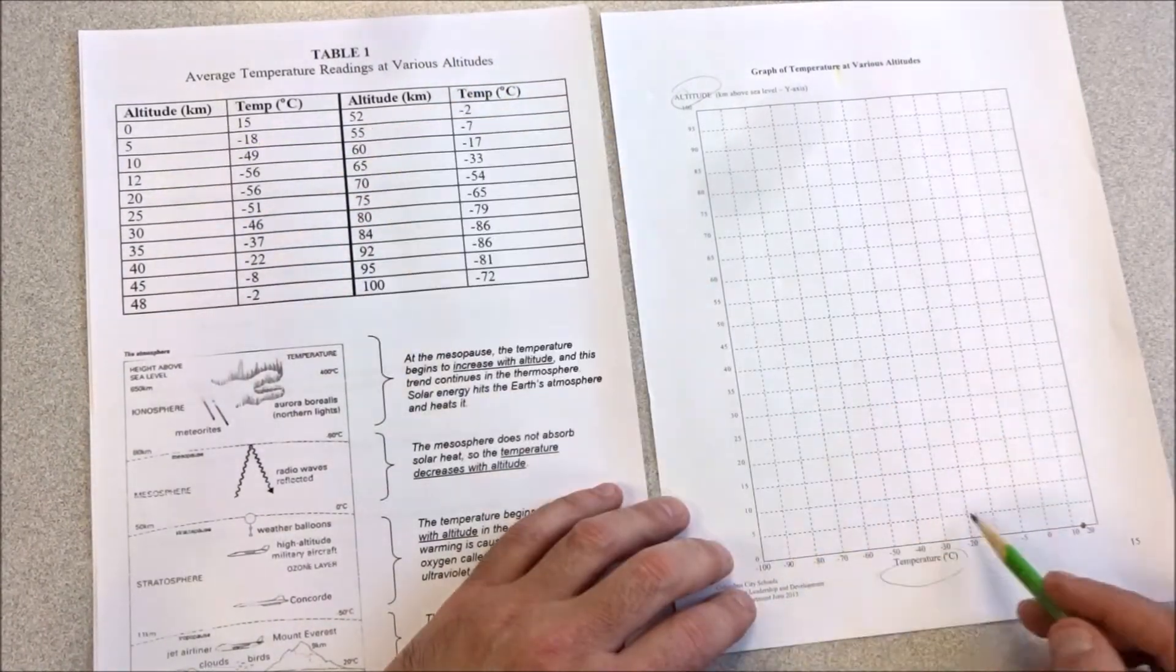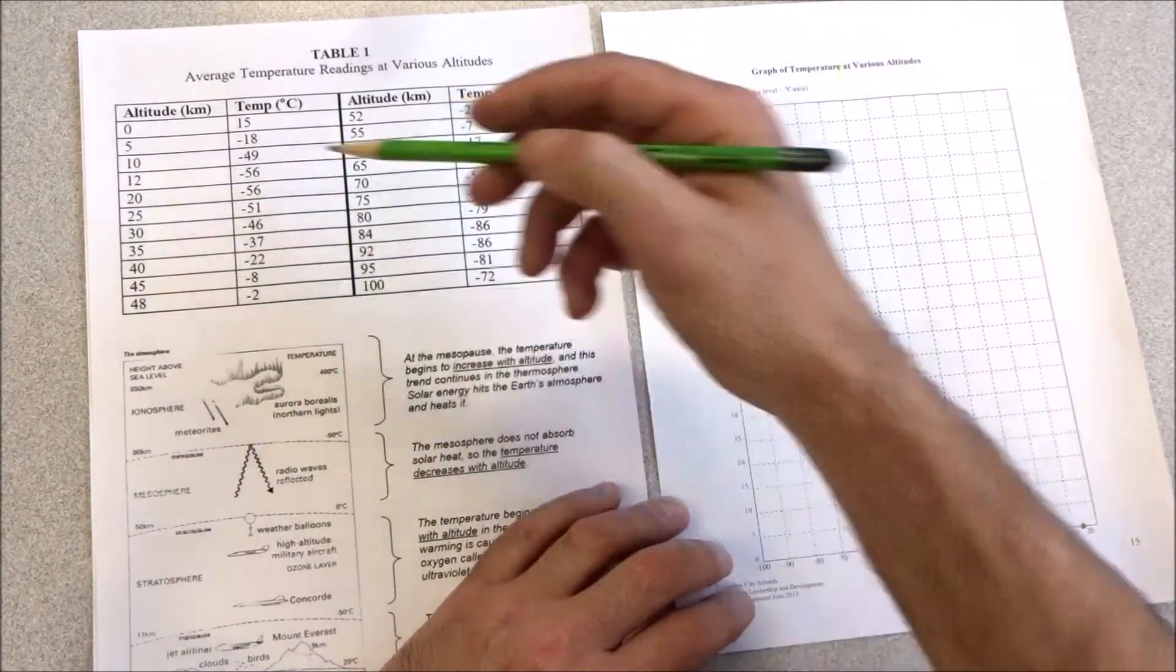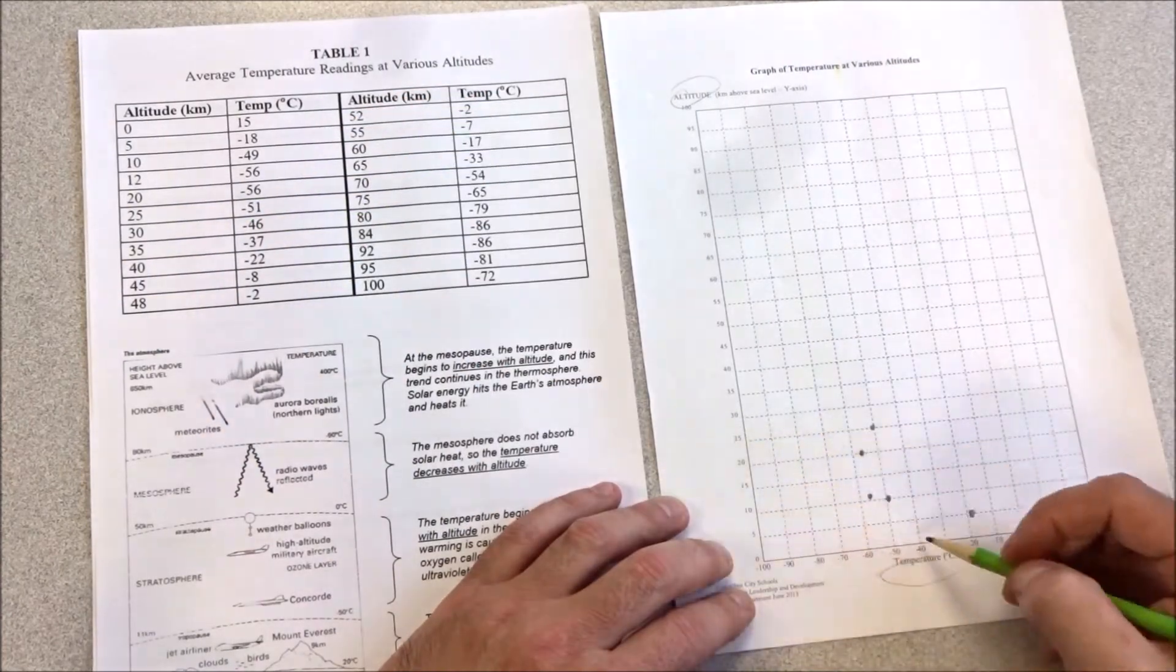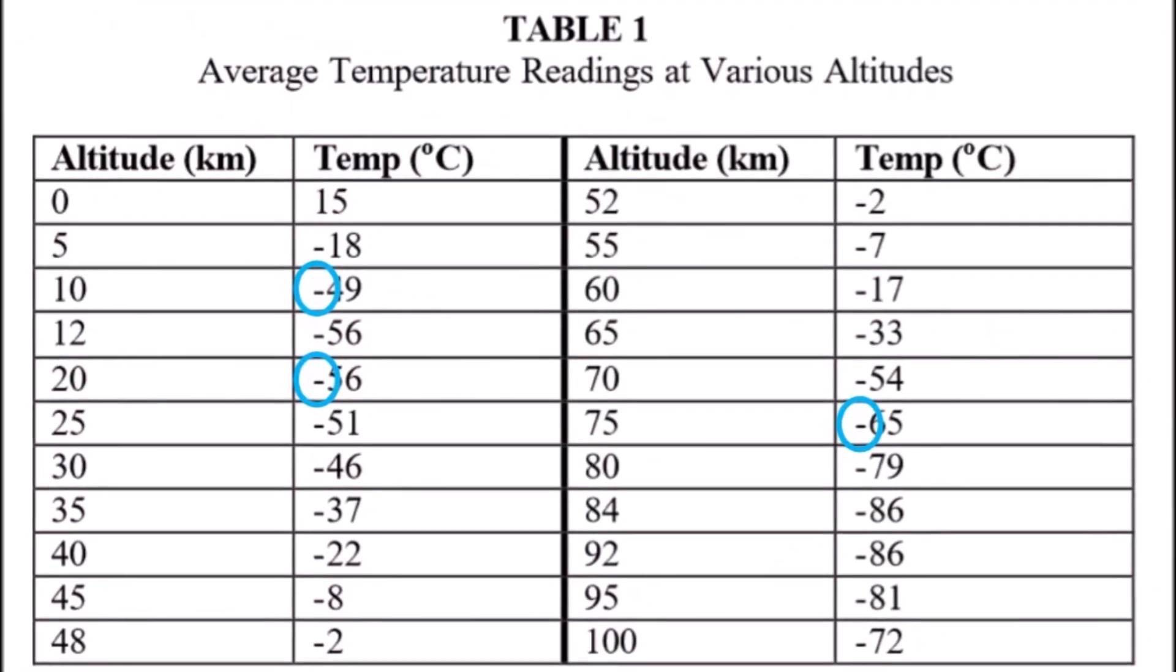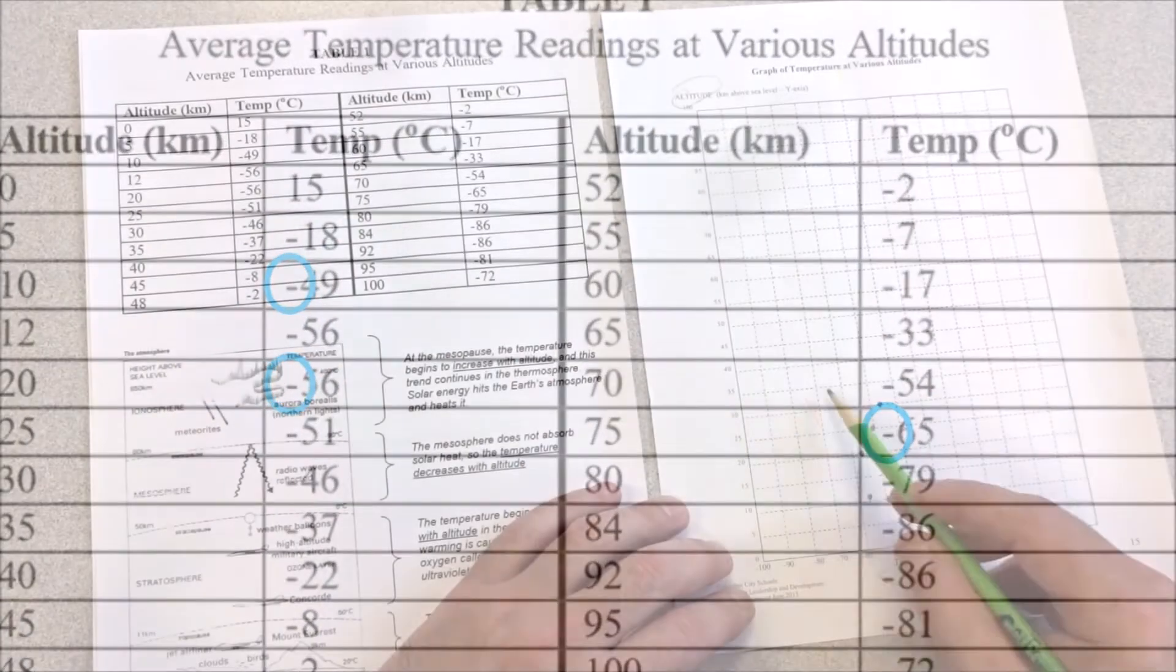So I started in pencil just in case I made any mistakes, and I find the altitude on the y-axis and then I move over and match that up with the temperature in degrees Celsius that's found at that particular altitude. Be careful or mindful to watch your negative degrees—they're easy to get mixed up, so make sure you watch for those negatives.